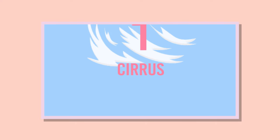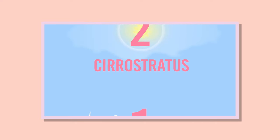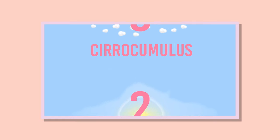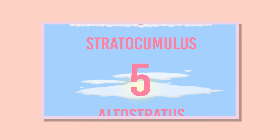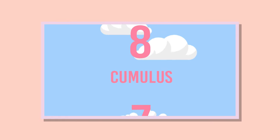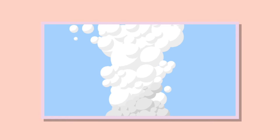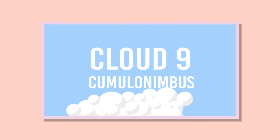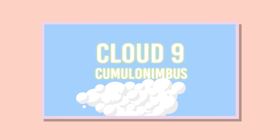The saying "on cloud nine" is generally associated with someone who is blissfully happy. But do you know where it originated from? It is believed that the saying comes from the 1896 edition of the International Cloud Atlas, which details ten different types of clouds, with cloud nine being cumulonimbus, which reaches up the highest of all clouds. So when you are on cloud nine, you are on top of the world.